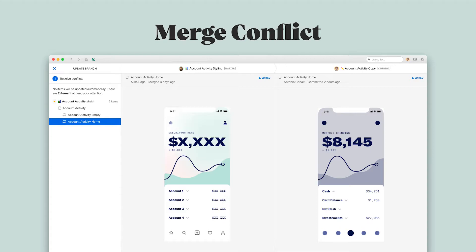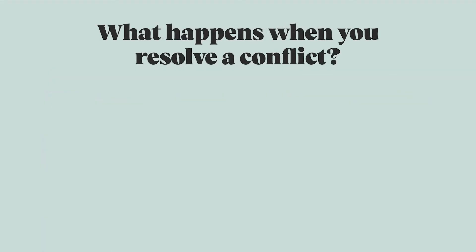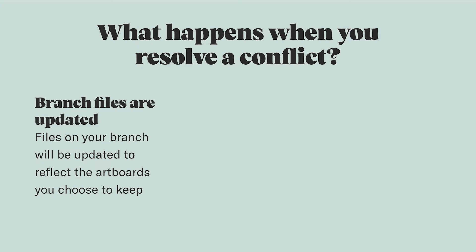You can choose to resolve conflicts one by one or in batches. There are a few things that are important to know about this process. First, the choice you make on the merge conflict screen only has an immediate impact on your branch. The artboards you choose to keep will reflect those changes in the files on your branch only.